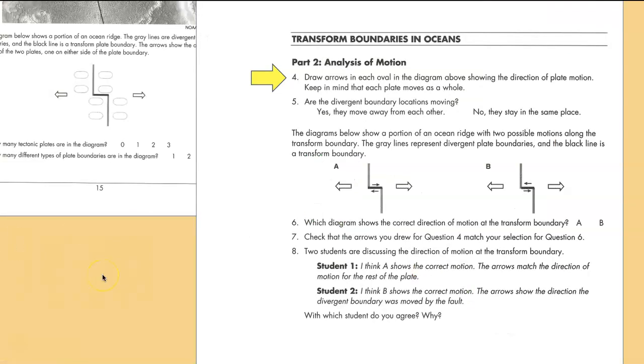Draw arrows in each oval of the diagram above, showing the direction of plate motion. So I've repeated the diagram here, and those arrows would look like this. Are the divergent boundary locations moving? No, they are not. So even though the seafloor is growing and moving, this boundary is staying exactly where it is.